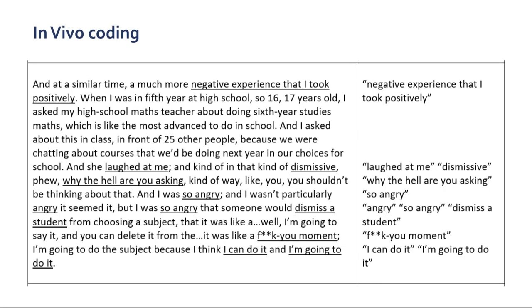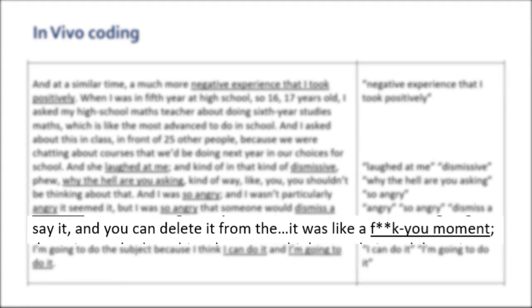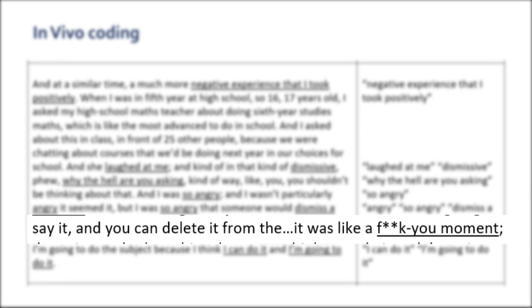Charmers, when writing about coding techniques for grounded theory, describes in vivo codes as helping us to preserve participants' meanings of their views and actions in the coding itself. This is especially important when collecting data from cultures or subcultures that are using different terminology or slang words. In vivo codes are rarely final codes, requiring further analytical elevation. In this example, the use of the expletive is particularly interesting because the participant is recalling an event from their childhood and they are still that angry about it — though aware of the professional setting and telling the researcher to edit the expletive out if they wish, they are still using it.